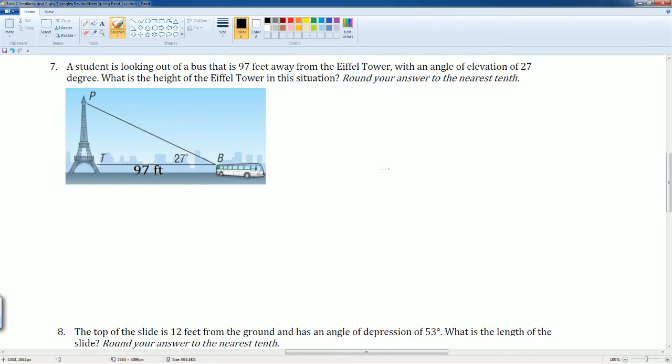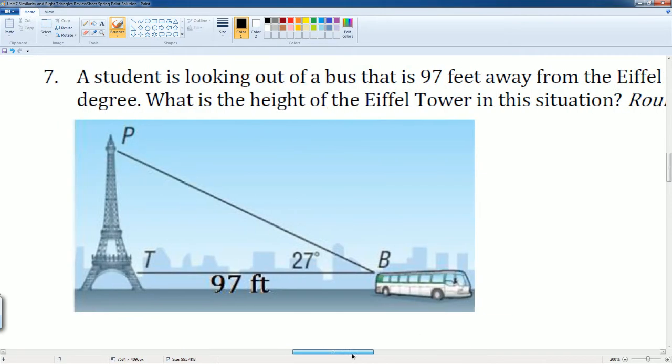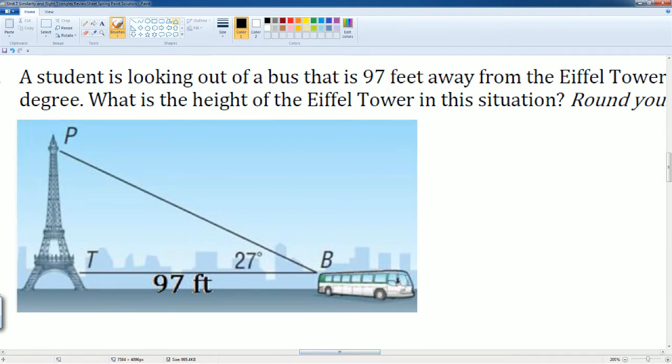The height of the Eiffel Tower is this part right here, and you can make that the letter H if you want. Here's the angle. If we draw our person right here, we can now label our information: 97, which is going to be your adjacent, and the height of the Eiffel Tower here is your opposite.